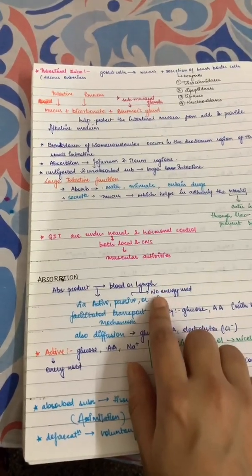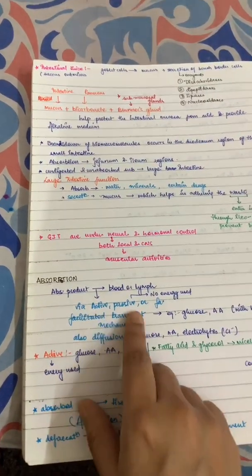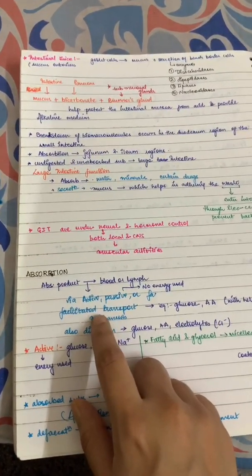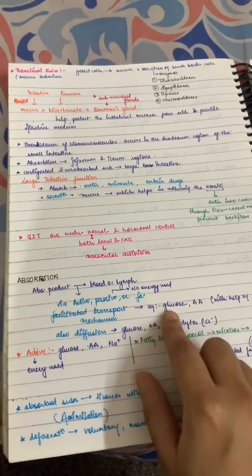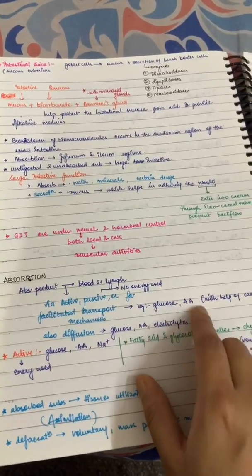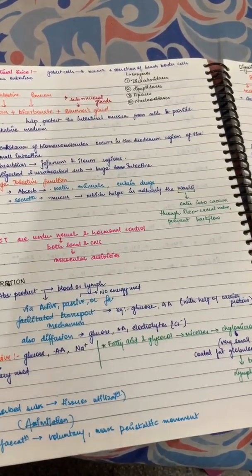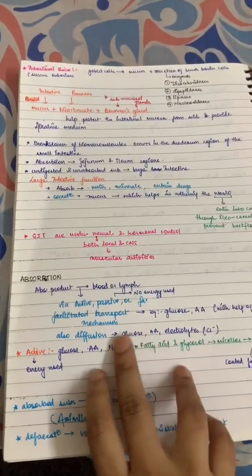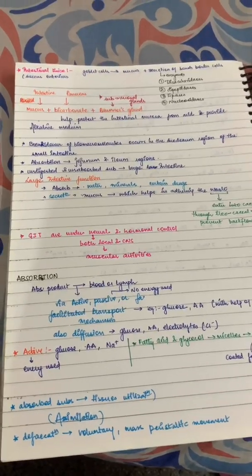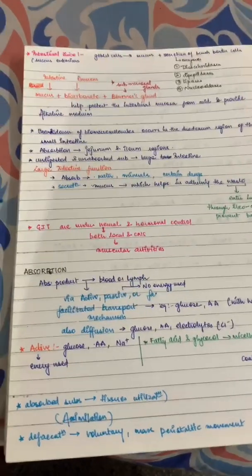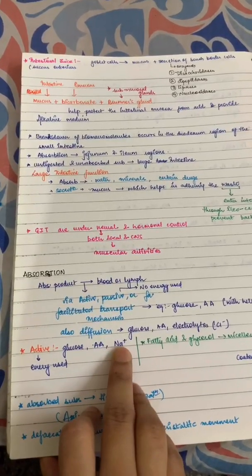Water is absorbed through osmotic gradient — a passive process that doesn't require energy. Glucose is absorbed through facilitated transport — a very famous question. Glucose and amino acids are absorbed through facilitated transport, meaning via carrier proteins. Electrolytes are also absorbed. Through active transport, glucose, amino acids, and sodium are absorbed.